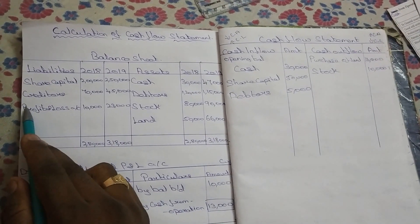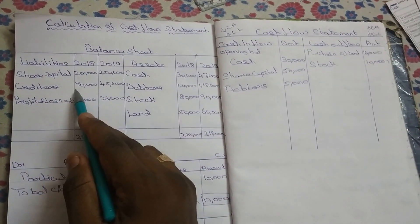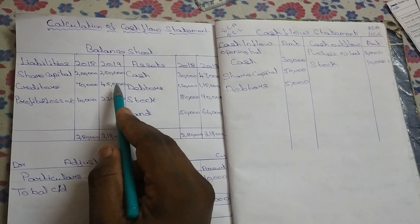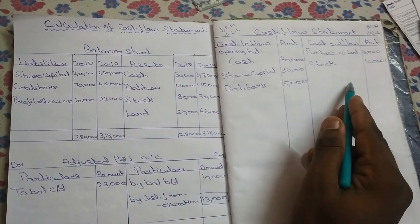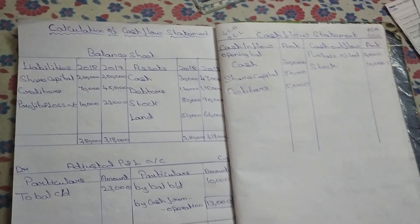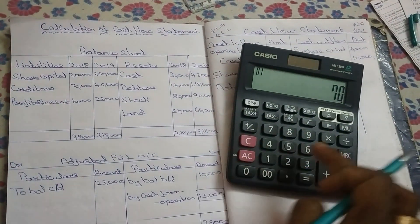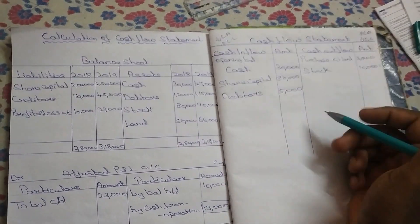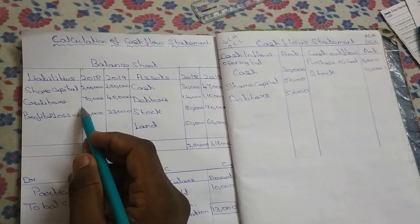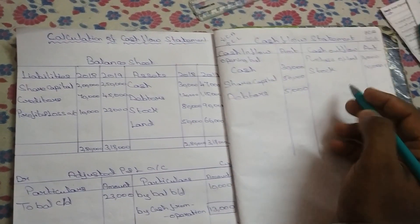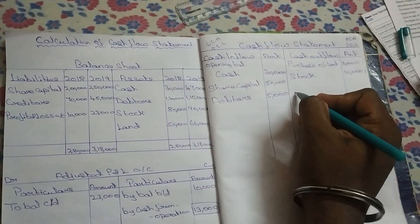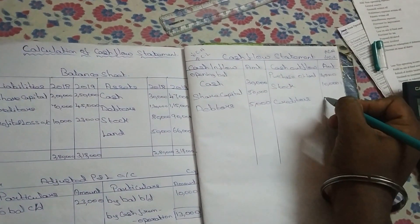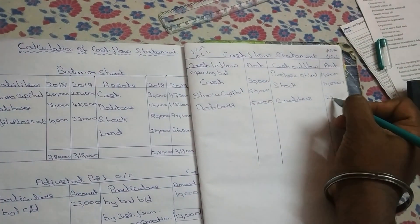Creditors: 70,000 and 45,000. Current liability is 70,000 and 45,000. Credit is 75,000 and 25,000.